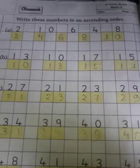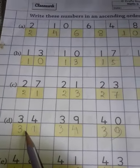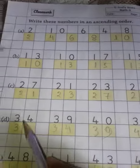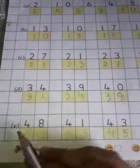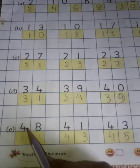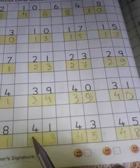Then 34, 39, 40, 31. First, the smallest number is 31, so we have to write 31, then 34, then 39, and then 40. Last one is 48, 41, 43, 45. So smallest number is 41.